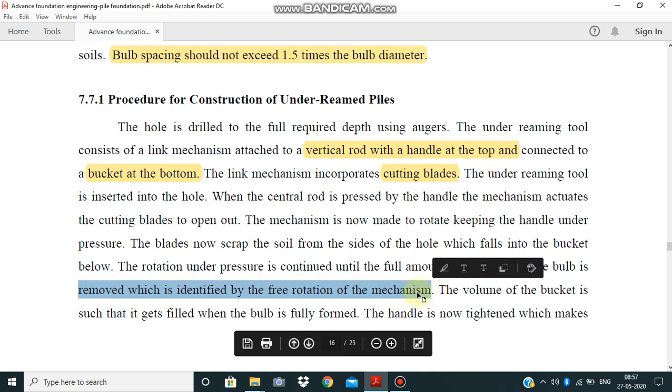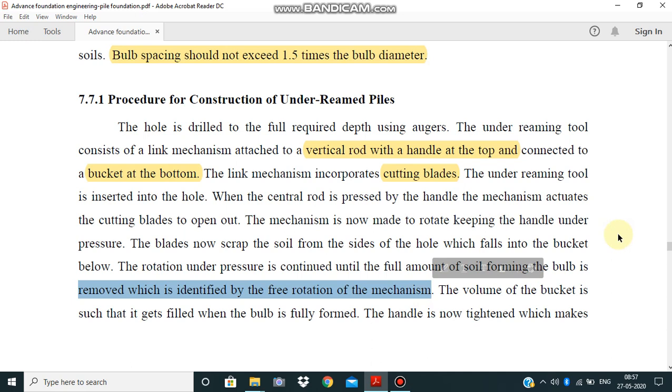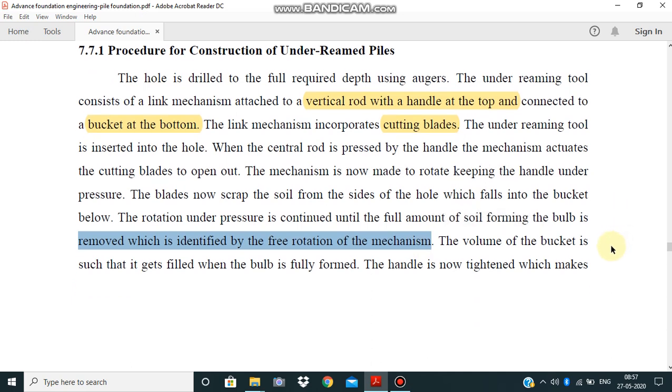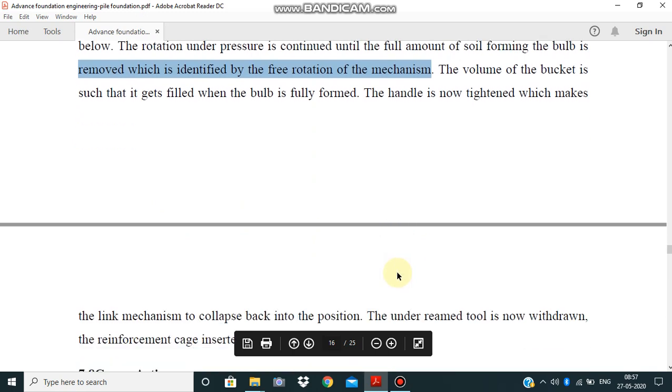The rotation and pressure result in forming the bulb, removing the soil which is identified by the free rotation of the mechanism. The volume of the bucket is such that it gets filled when the bulb is fully formed. Then the handle is tightened, which makes the link mechanism collapse back into position.